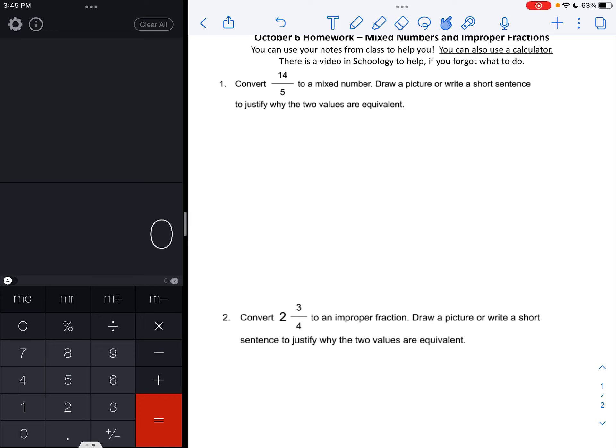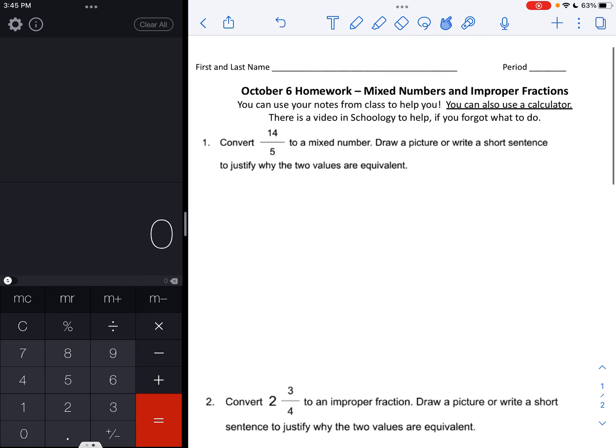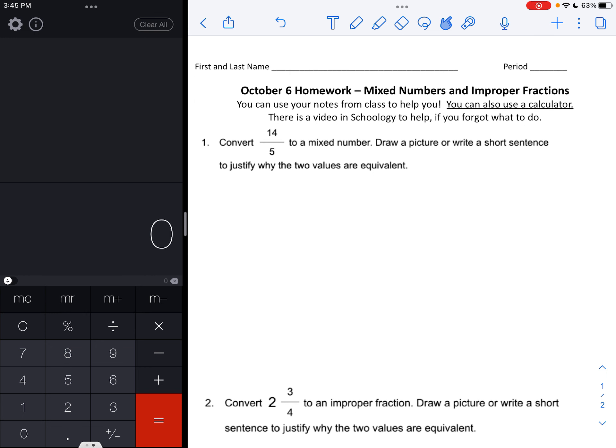All right, hello sixth graders. I know that what we went over today in class was a little bit more difficult than the past few days, so I'm going to go over question one on the homework. Question one says: convert 14 fifths to a mixed number, and then draw or write a short sentence to justify why the two values are equivalent.